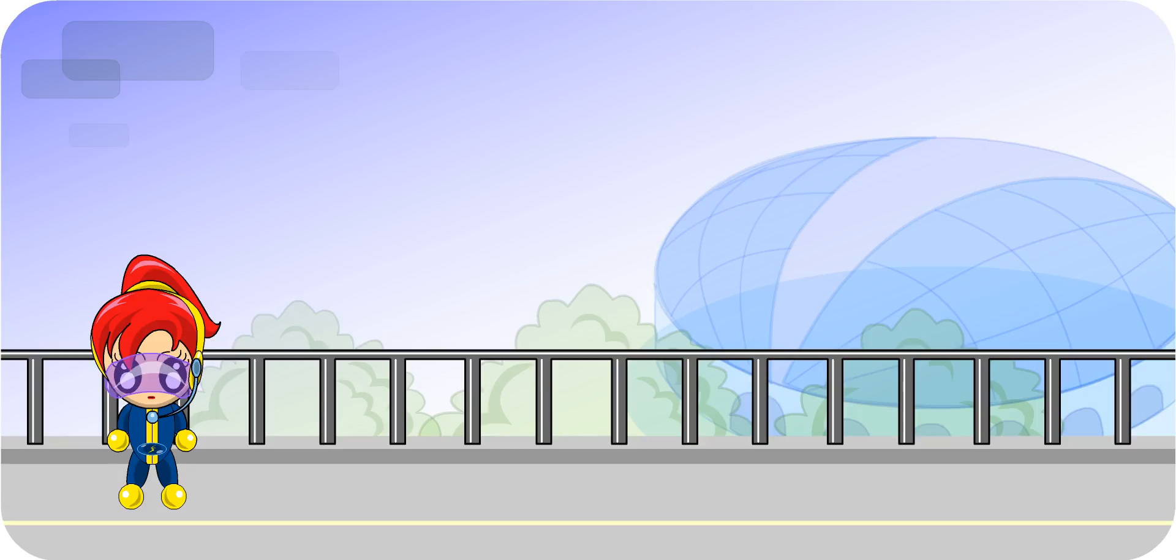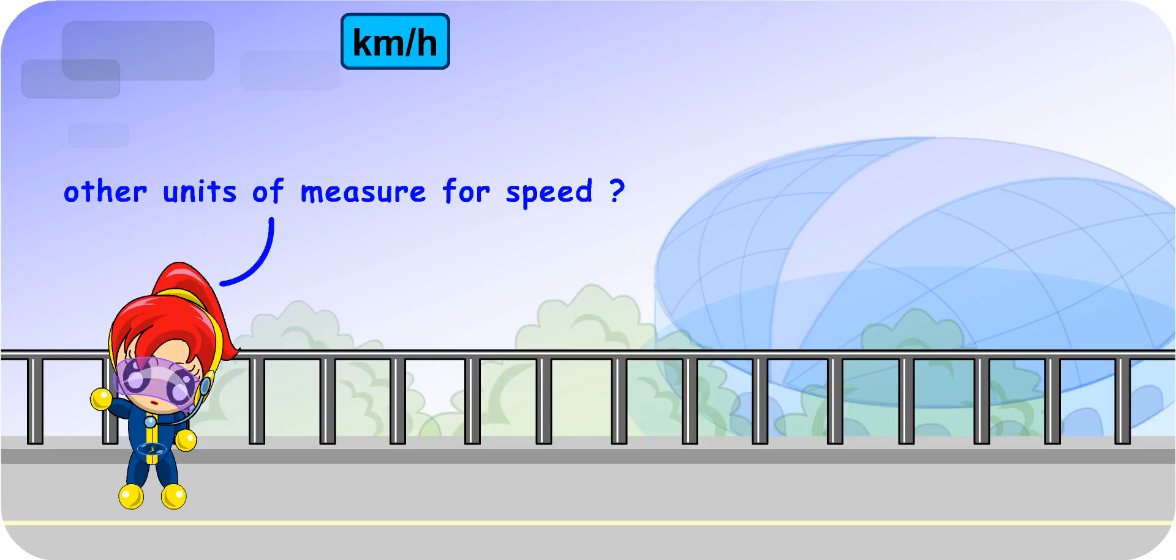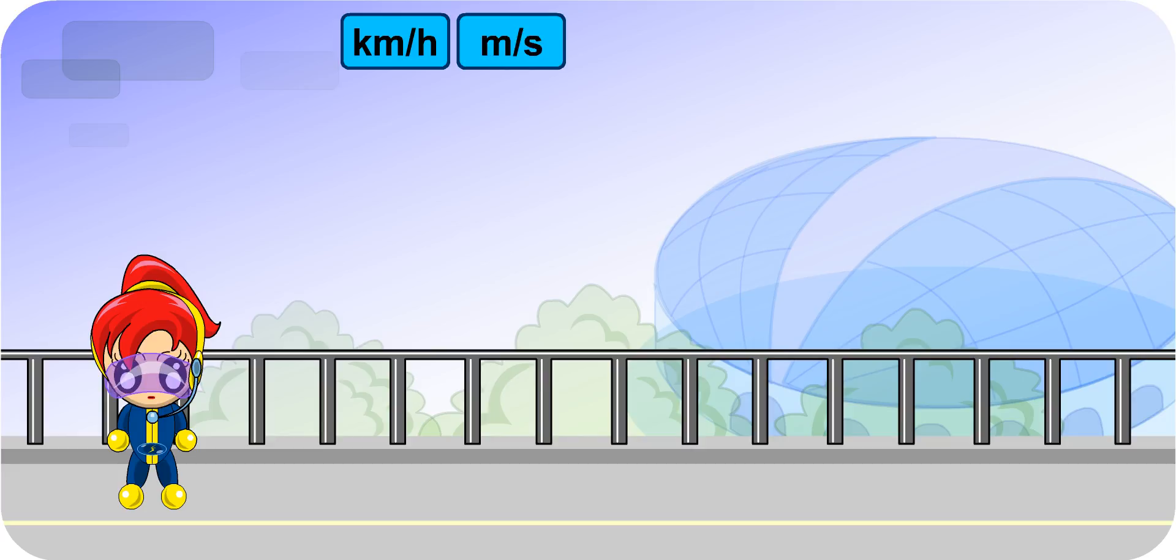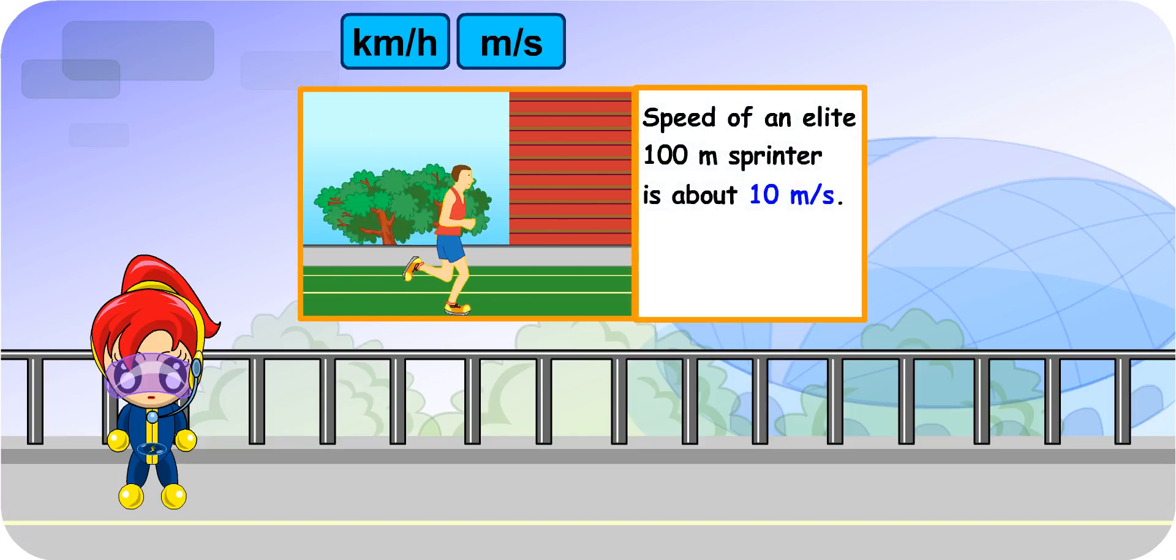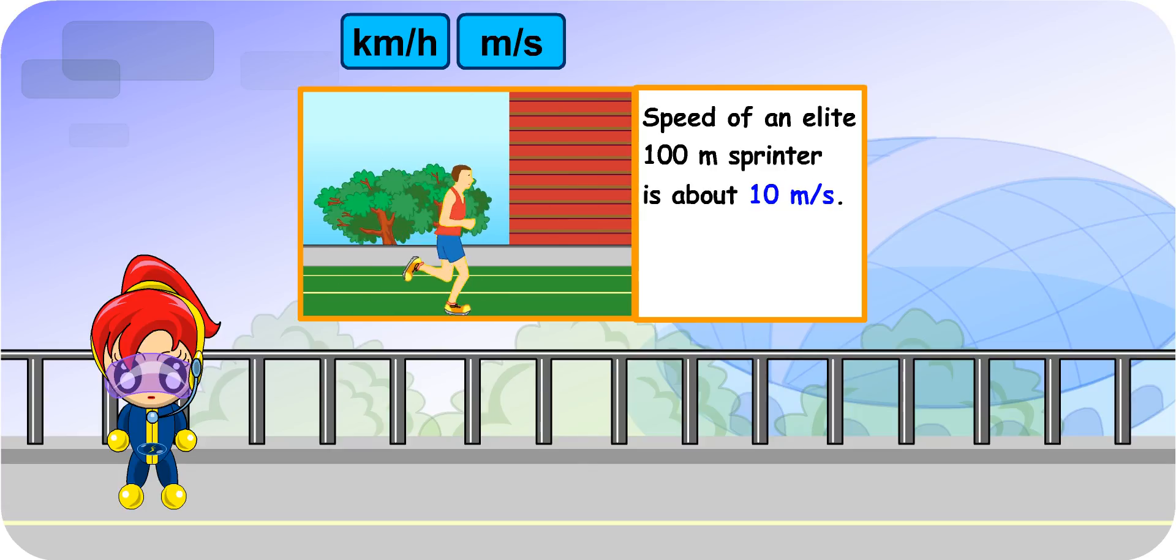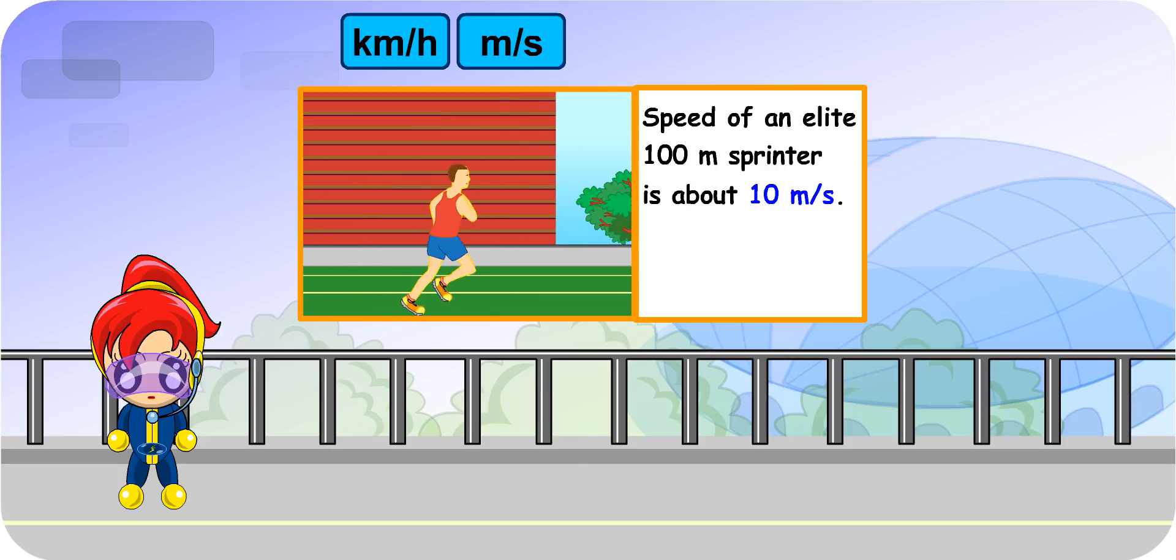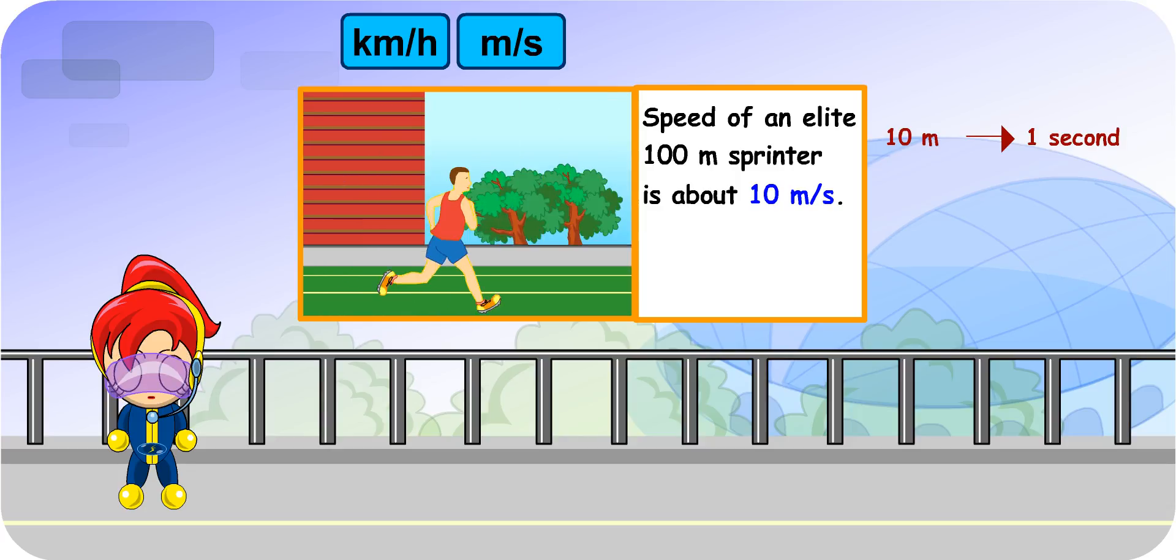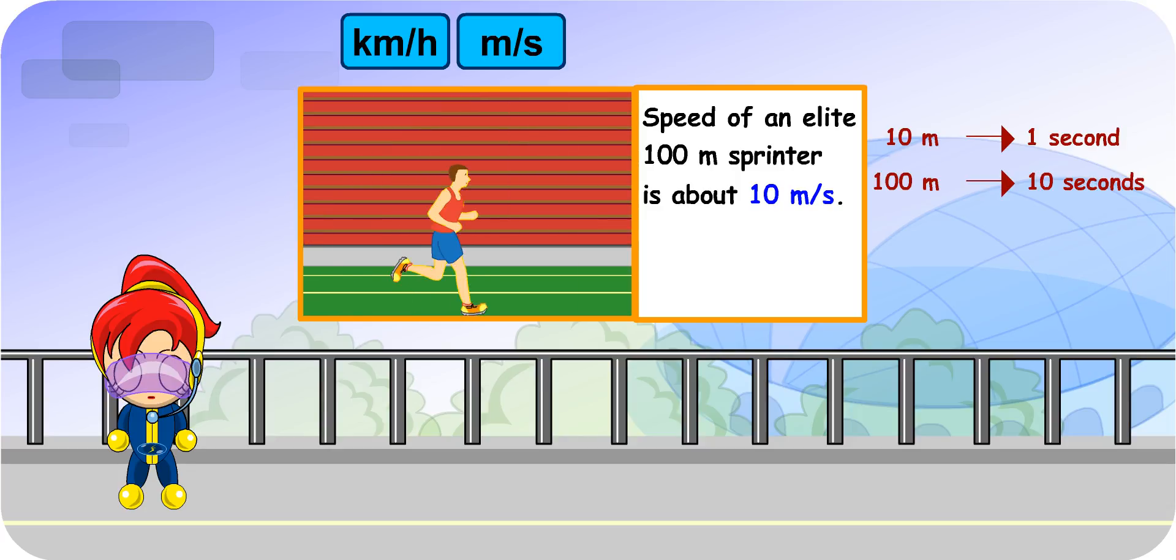You have learnt that speed can be expressed in km per hour. Turbo Girl, do you know other units of measure for speed? I am not too sure, teacher. Well, speed can also be expressed in meters per second. For example, the speed of an elite 100 m sprinter is about 10 m per second. This means that he runs at a speed of 10 m for every second. Thus, he will cover 100 m in about 10 seconds.